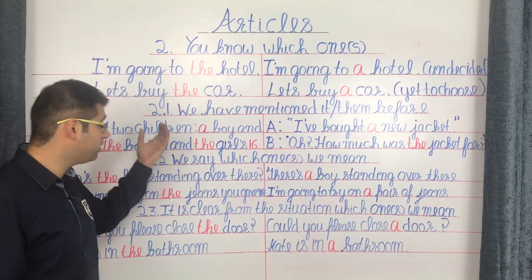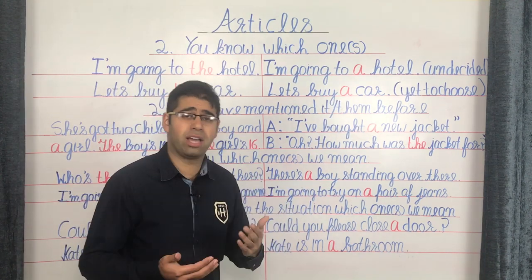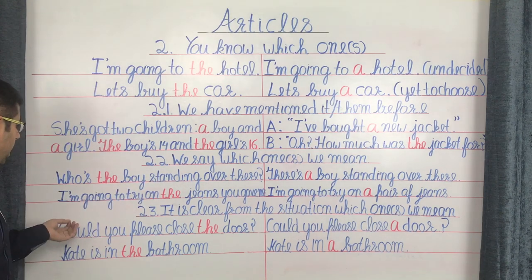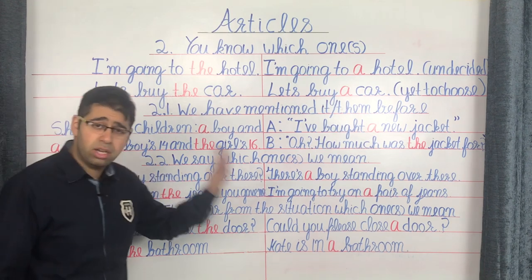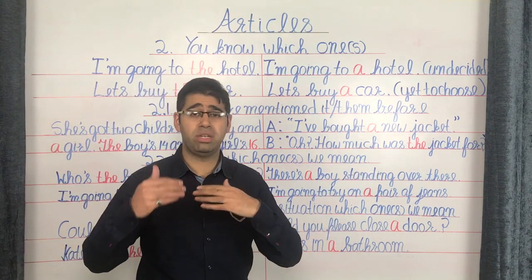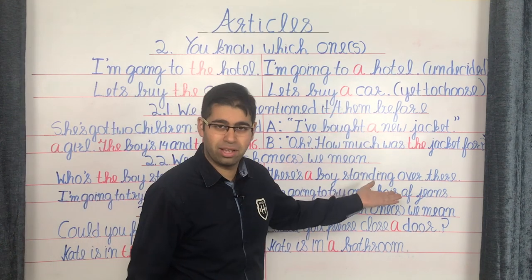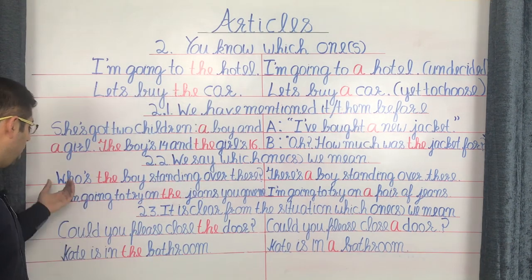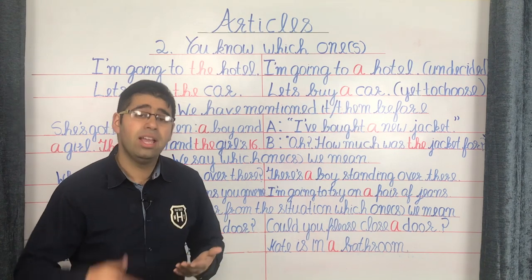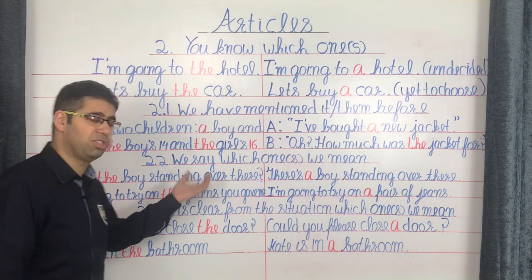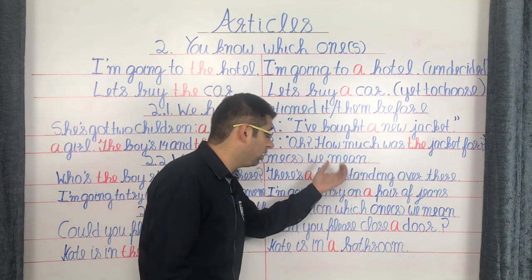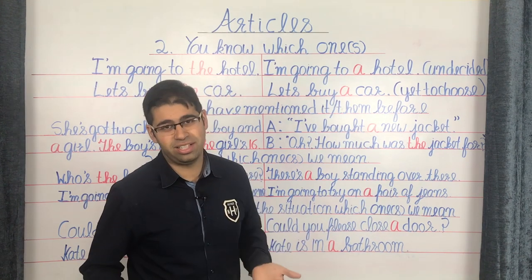The next situation is when we say which one we mean — when the speaker specifies the thing or person. 'Who's the boy standing over there?' — the speaker makes clear which boy, so THE. Versus 'There's a boy standing over there' — general information, so A. Another example: 'I'm going to try on the jeans you gave me' — specific pair, so THE. Versus 'I'm going to try on a pair of jeans' — nothing specific has been chosen yet, so A.